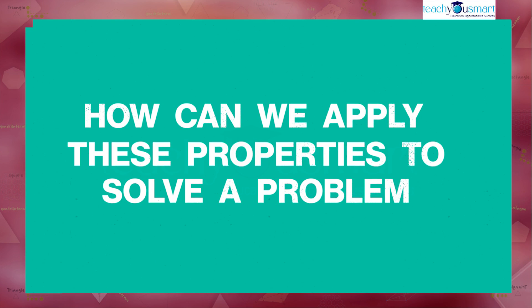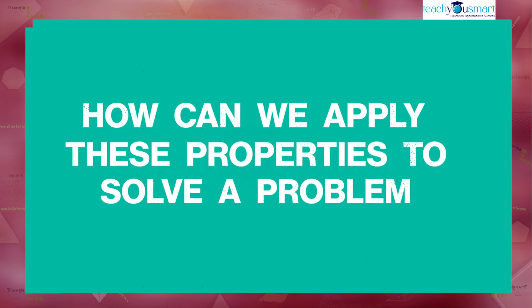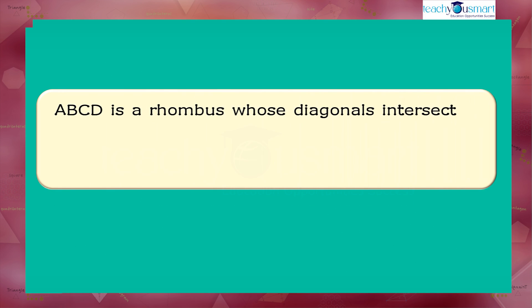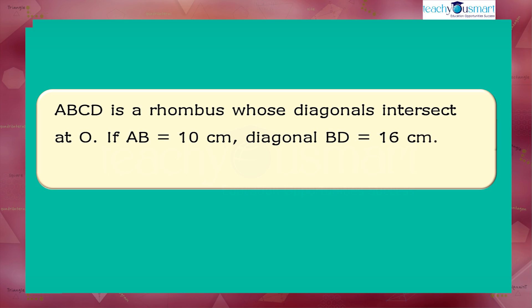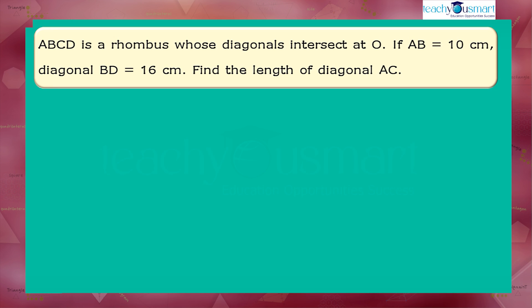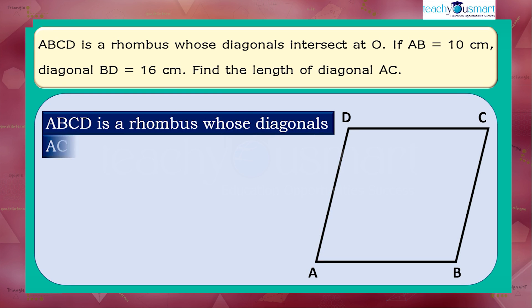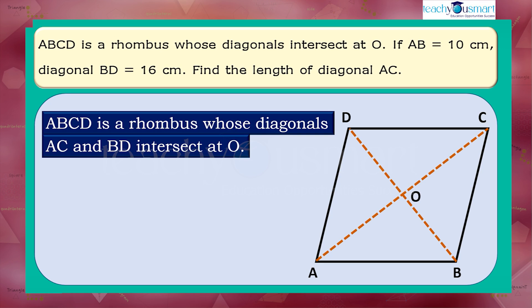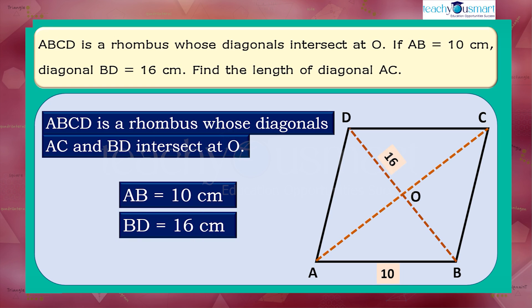Let's see how we can apply these properties to solve a problem. ABCD is a rhombus whose diagonals intersect at O. If AB equals 10 centimeters and diagonal BD equals 16 centimeters, find the length of diagonal AC. Given that ABCD is a rhombus whose diagonals AC and BD intersect at O, with side AB equals 10 centimeters and diagonal BD equals 16 centimeters, we have to find the length of diagonal AC.